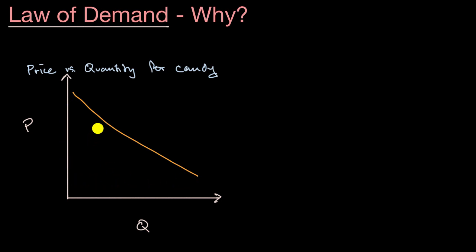So if you were to graph demand, and so this right over here is our demand curve, where price is on our vertical axis and quantity is on our horizontal axis, which is the standard convention for most economists, you would have a downward sloping demand curve.